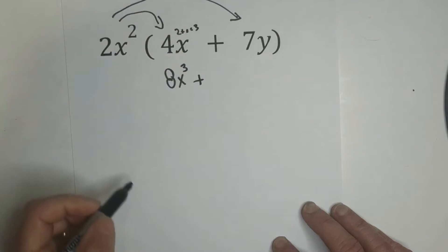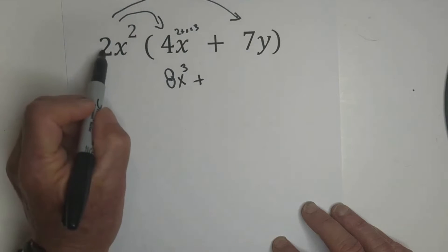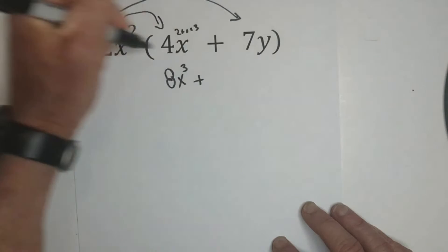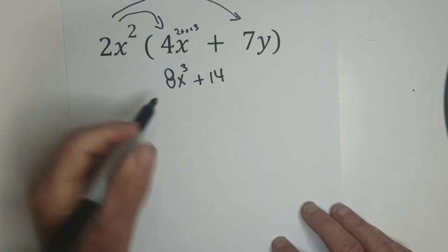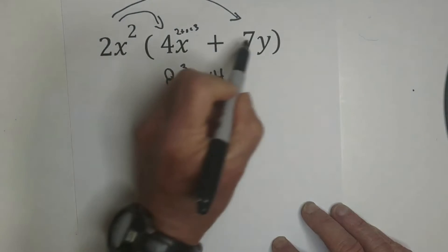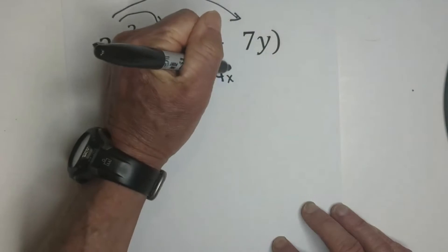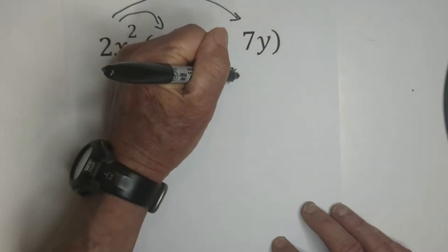Then we're going to bring down the operator, and we have 2 times 7, which is 14. There is not an x here, so we're just going to bring it over, and then we bring the y down.